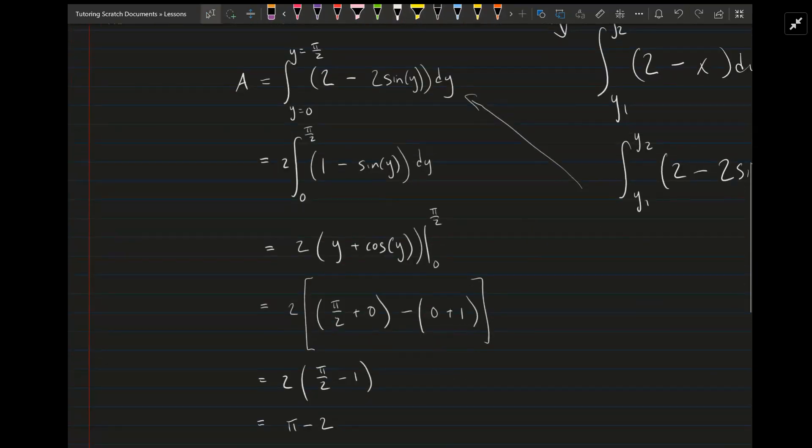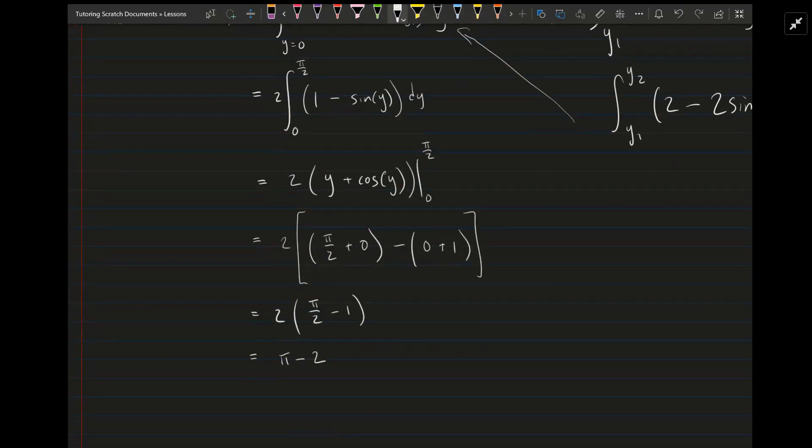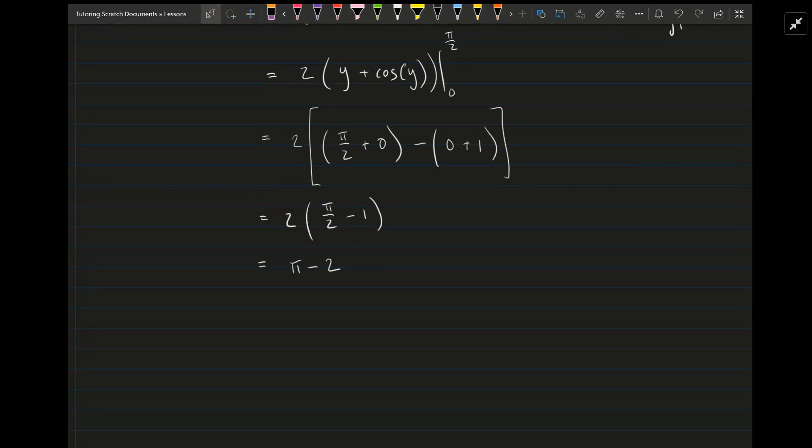So doing that right here, I just factored out a 2. And then you can take the antiderivative of the function, which will be, that just becomes y, and the antiderivative of negative sine of y is just cosine of y. And when you evaluate that integral,